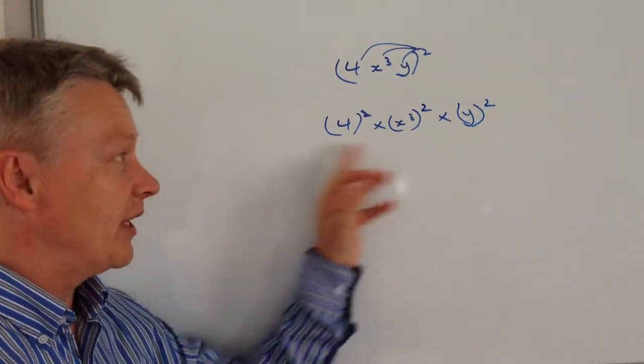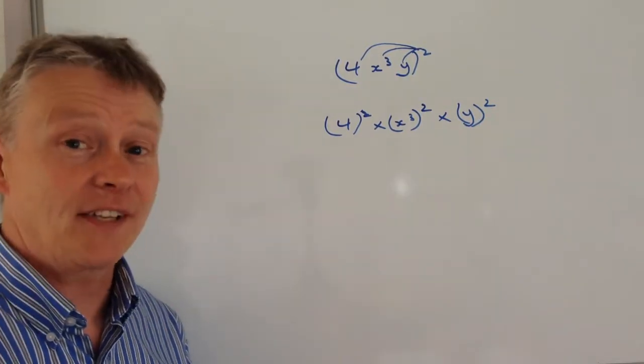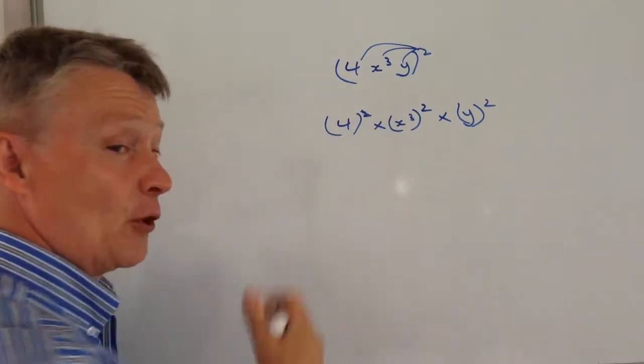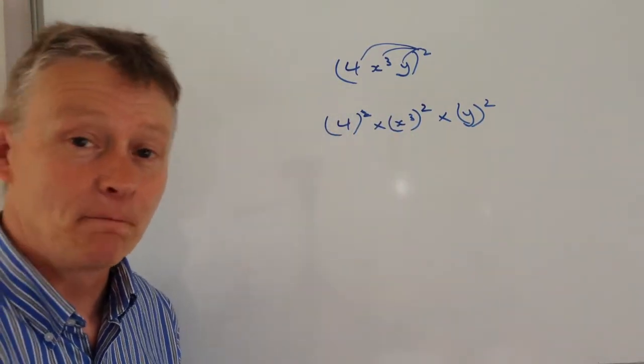And then it's a case of working out each of those and then putting them back together again. So we've got 4 squared, which is 4 times 4, which is going to be 16.